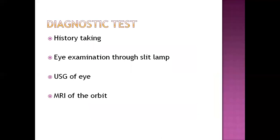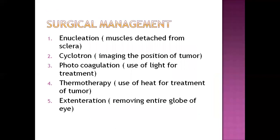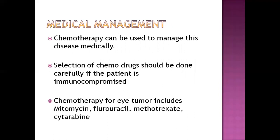Retinal tumor can be diagnosed through history taking, eye examination via slit lamp, USG of the eye, and MRI of the orbit. Surgical management includes enucleation (muscles detached from sclera), cyclotron imaging to locate the tumor, photocoagulation using light for treatment, thermotherapy using heat for treatment, and exenteration to remove the entire globe. Medical management includes chemotherapy — drug selection should be careful if the patient is immunocompromised. Chemotherapy drugs for eye tumors include mitomycin, fluorouracil, methotrexate, and cytarabine.